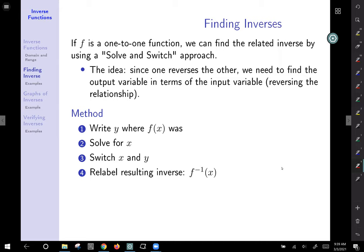But the idea is the same either way. Since one function reverses the other, we need to find the output variable in terms of the input, reversing the relationship. So if you don't have x and y in your expression, if you have it in terms of f of x, you have to replace f of x with y.